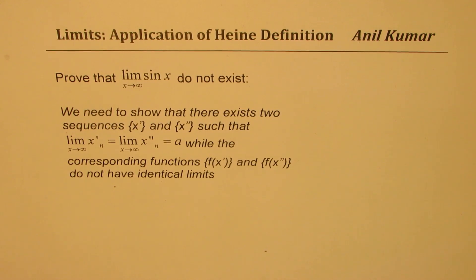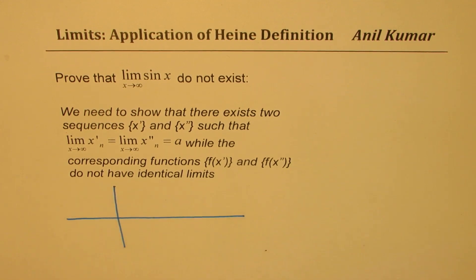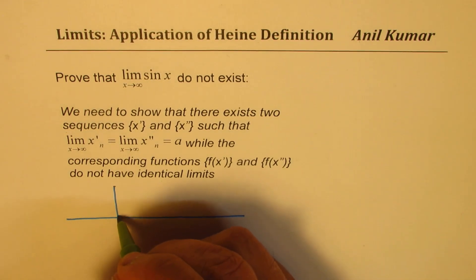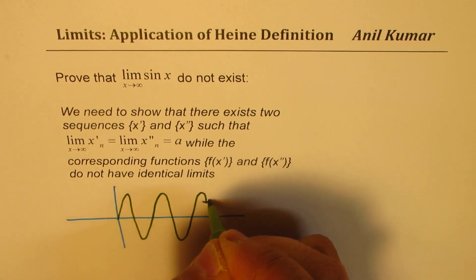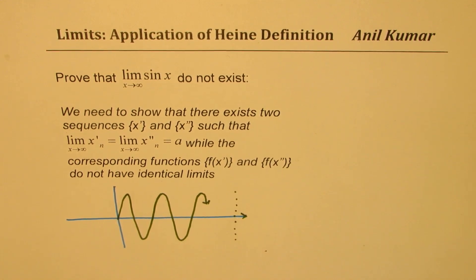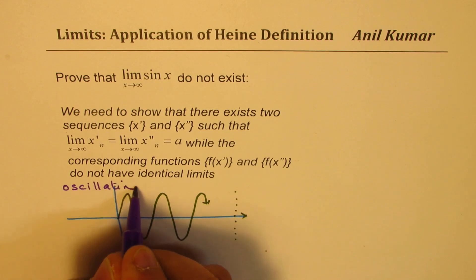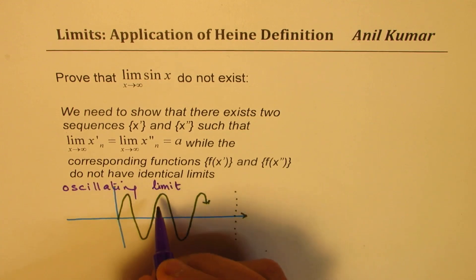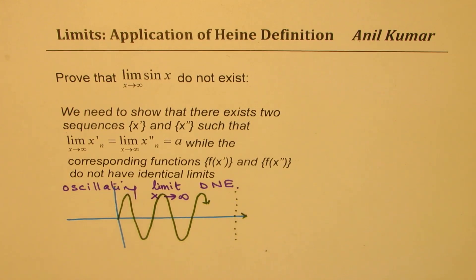Normally we have been taking it for granted or explaining it using a diagram. How do we do it? We just sketch the graph of sine x and say, well, this is sine x. It oscillates from plus 1 to minus 1. So when x is approaching very large, we don't know where it is since it is oscillating. So we say, since this is oscillating, the limit as x approaches infinity does not exist. That's what is given in most of the books.